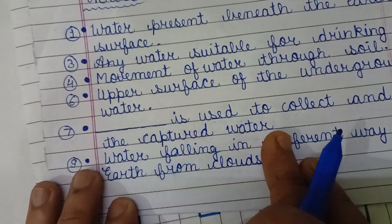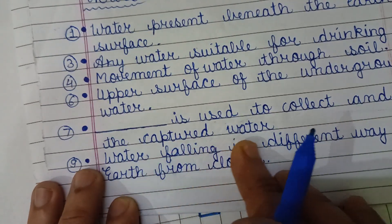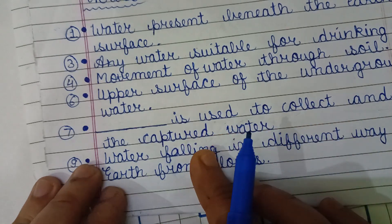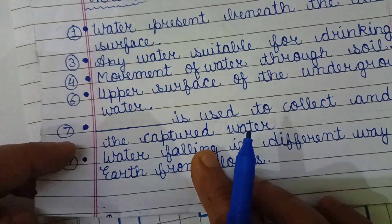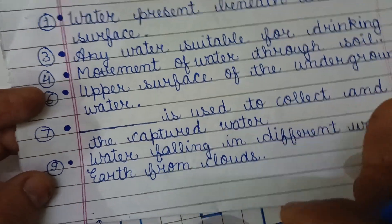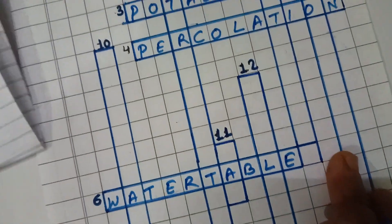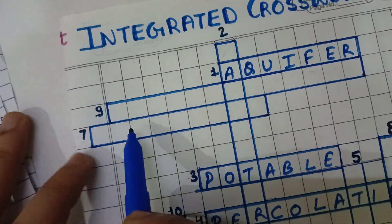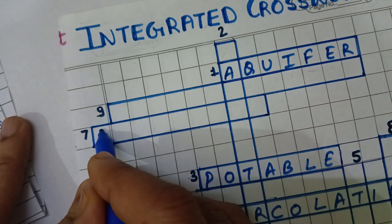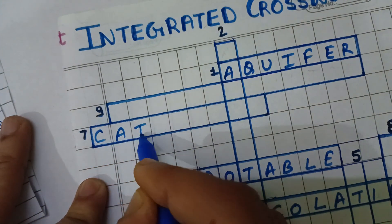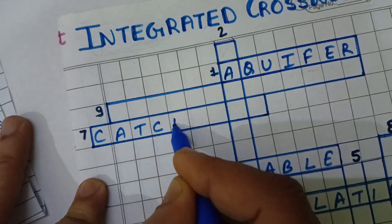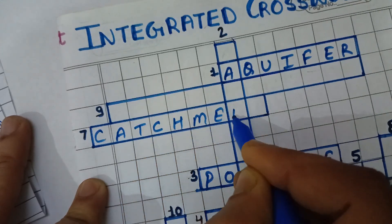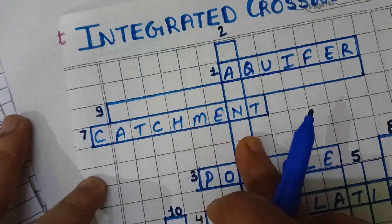Which is used to collect and store the captured water is known as catchment. This is 7 across — C-A-T-C-H-M-E-N-T — catchment.